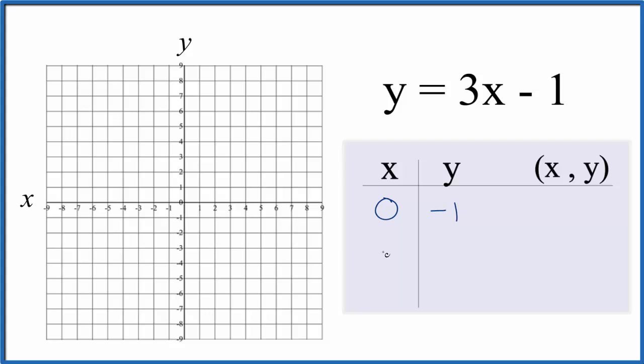Let's put a 1 in. 3 times 1, that's 3, minus 1 gives us 2, and how about negative 1? So 3 times negative 1, that's negative 3, minus 1 is negative 4.